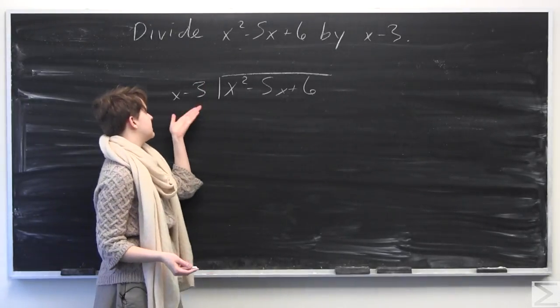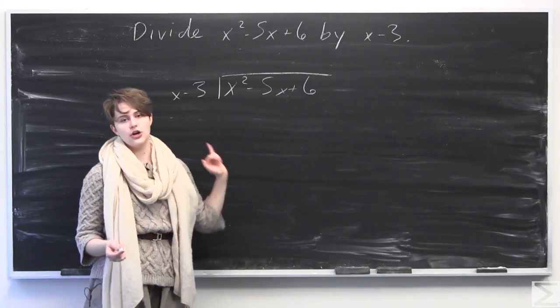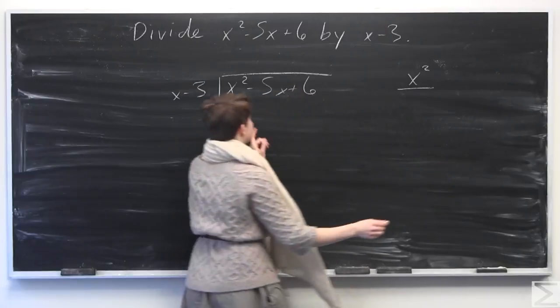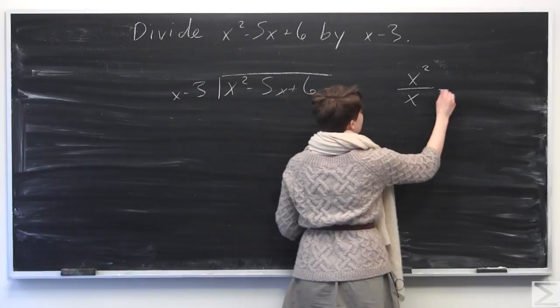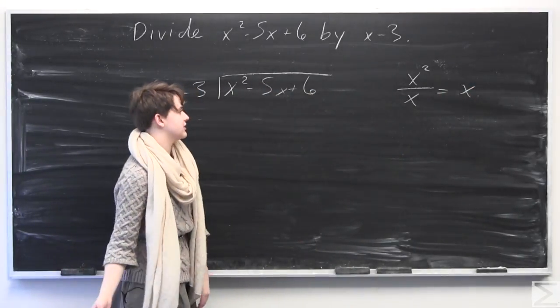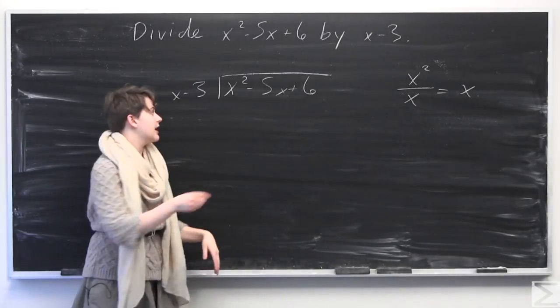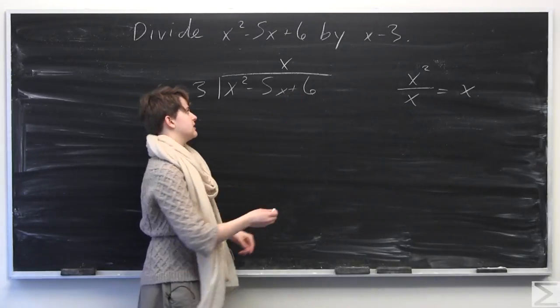We need to find something to multiply x minus 3 by to get it to go into x squared. We take the first term x squared and divide it by x, and we get x, assuming x is not equal to 0. We're going to multiply everything by x, putting the x above the x term on the negative 5x.